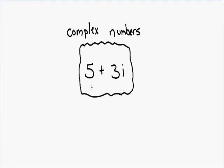Welcome to my video on complex numbers. What is a complex number? A complex number consists of a real part and an imaginary part. Let's take a look at this example: 5 plus 3i. We have the real number 5, which is the real part of the complex number, and we also have the imaginary number 3i, which is the imaginary part of this complex number.